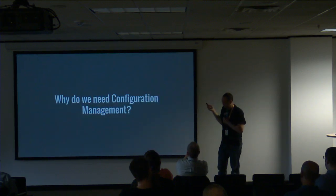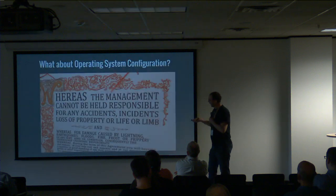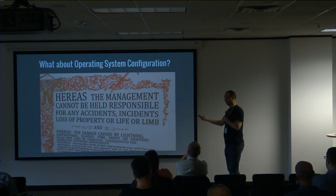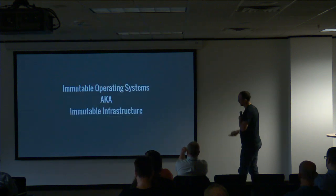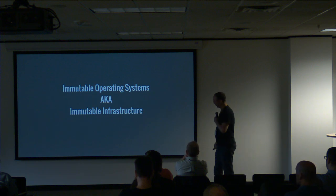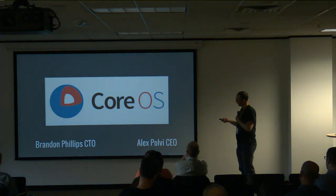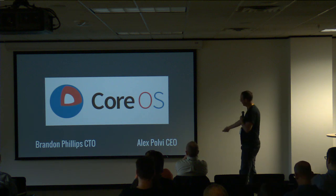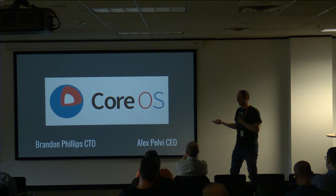So if we have all of this, why do we need configuration management? Why do we need Ansible or Salt? You might say: what about the operating systems? Containers have to run on operating systems — you have to configure the OS before containers can run on them, right? That's where we talk about immutable operating systems, or what some in the industry call immutable infrastructure. The big player is CoreOS. Brandon Phillips and Alex both worked at Rackspace, so I kind of think of it as Rackspace's brainchild.